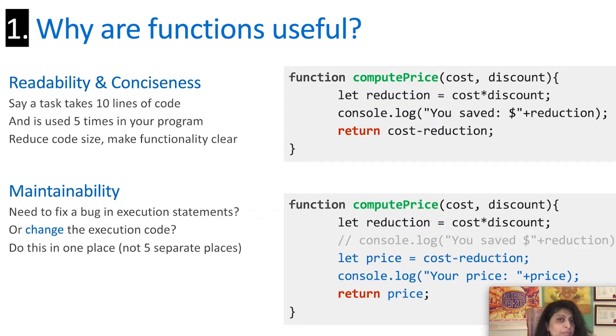Why are functions useful? Because when you have code like this that you use again and again, by abstracting them into a function that is reusable, you get two benefits. First, you get readability and conciseness. Think about a task that takes 10 lines of code that you use five times in your program. That's 50 lines of code right there. By abstracting it into a function, you can potentially reduce it to 10 lines of code for the execution of the task and five invocation statements, from 50 to 15.